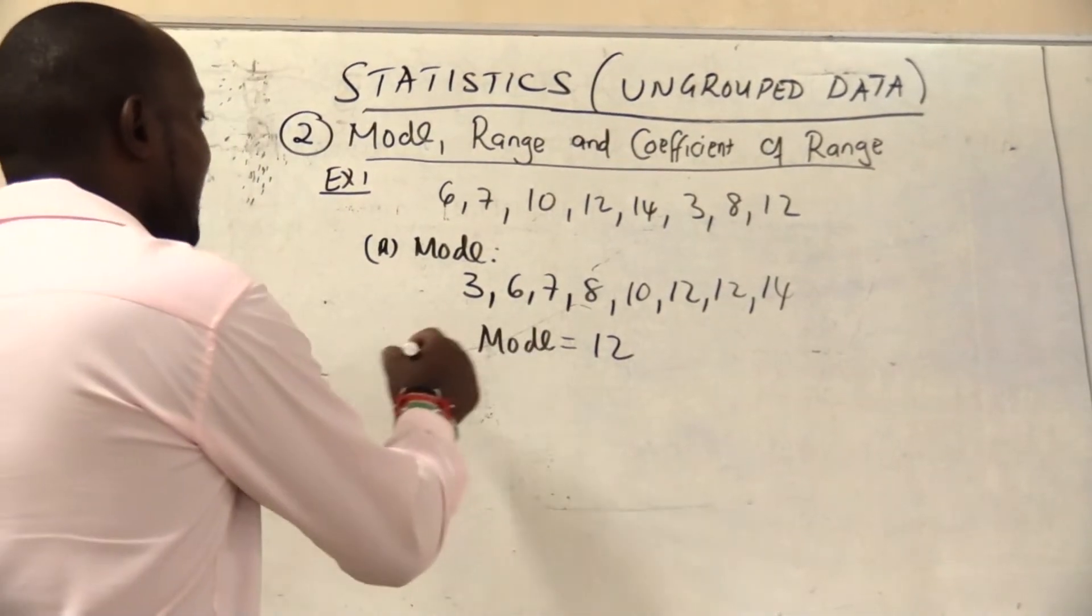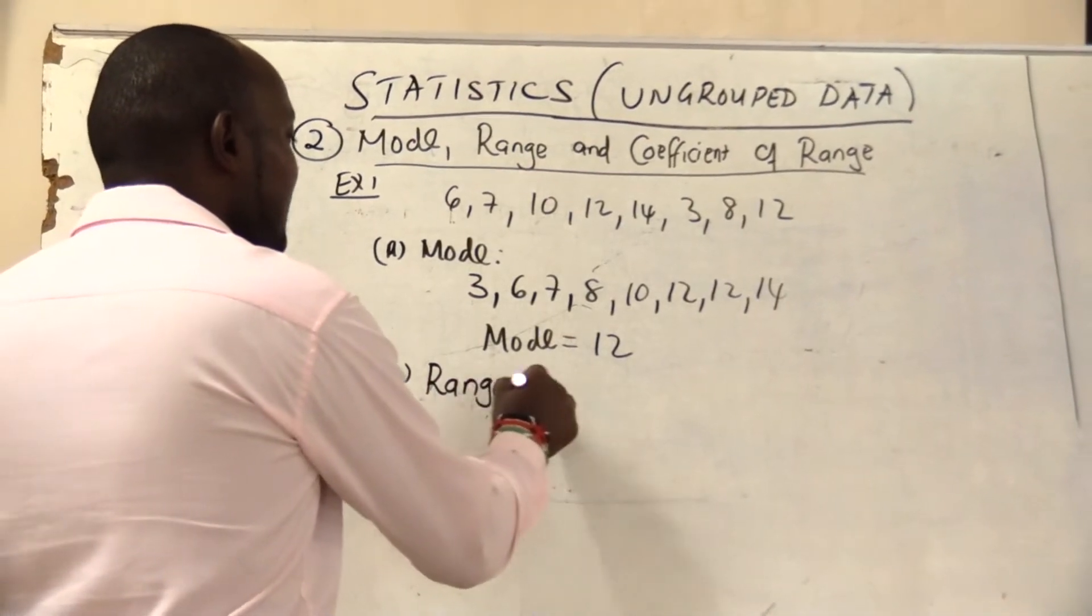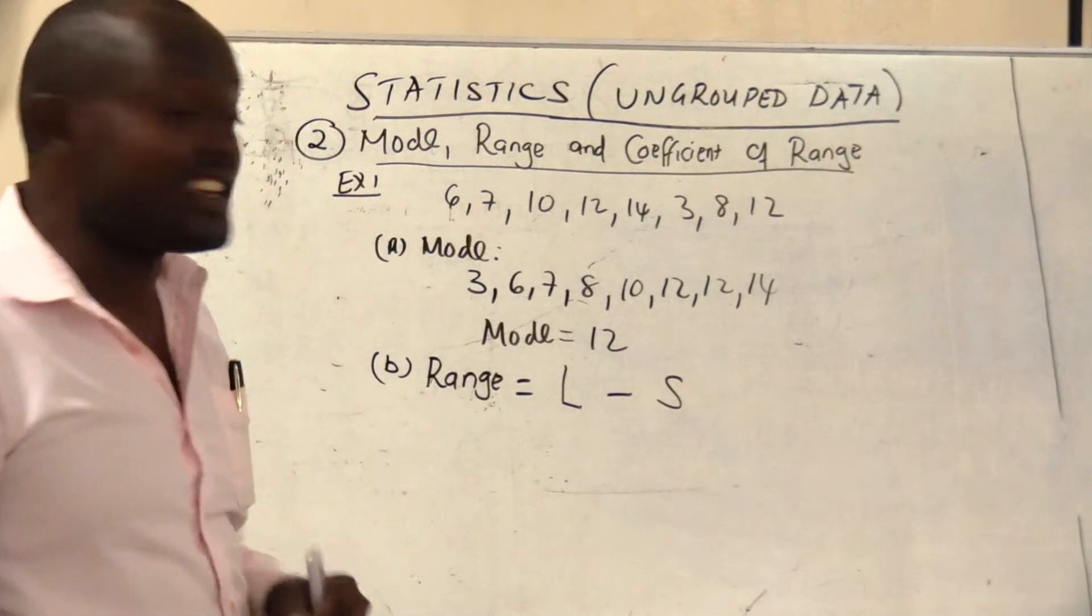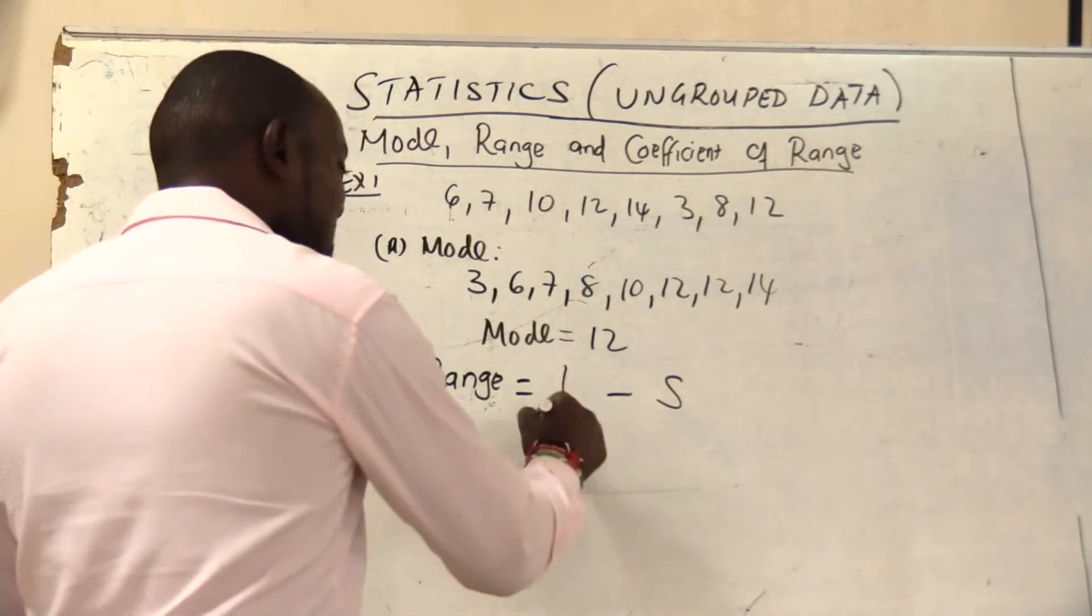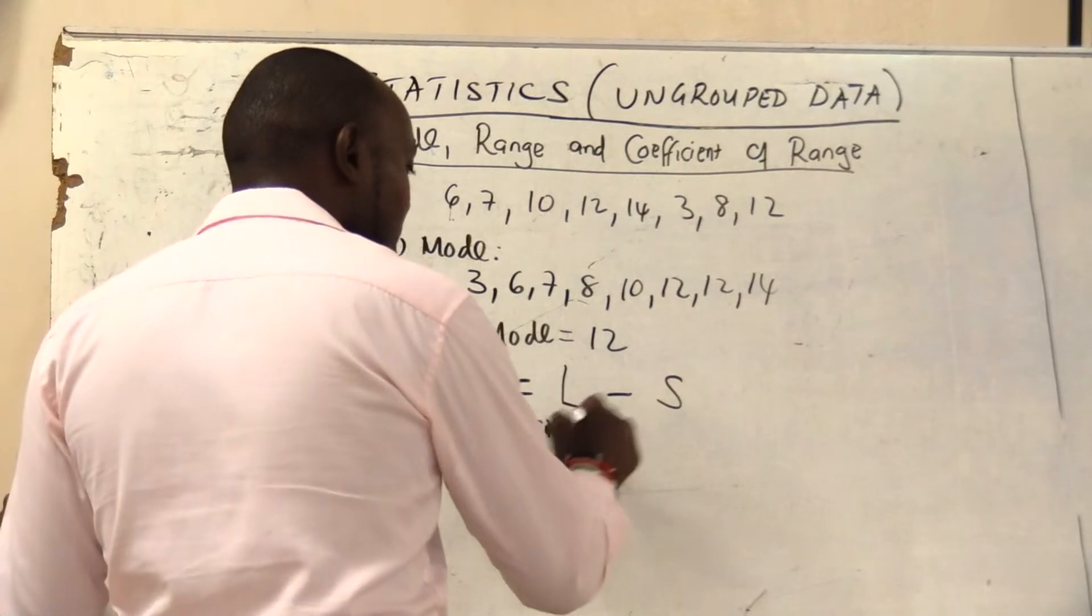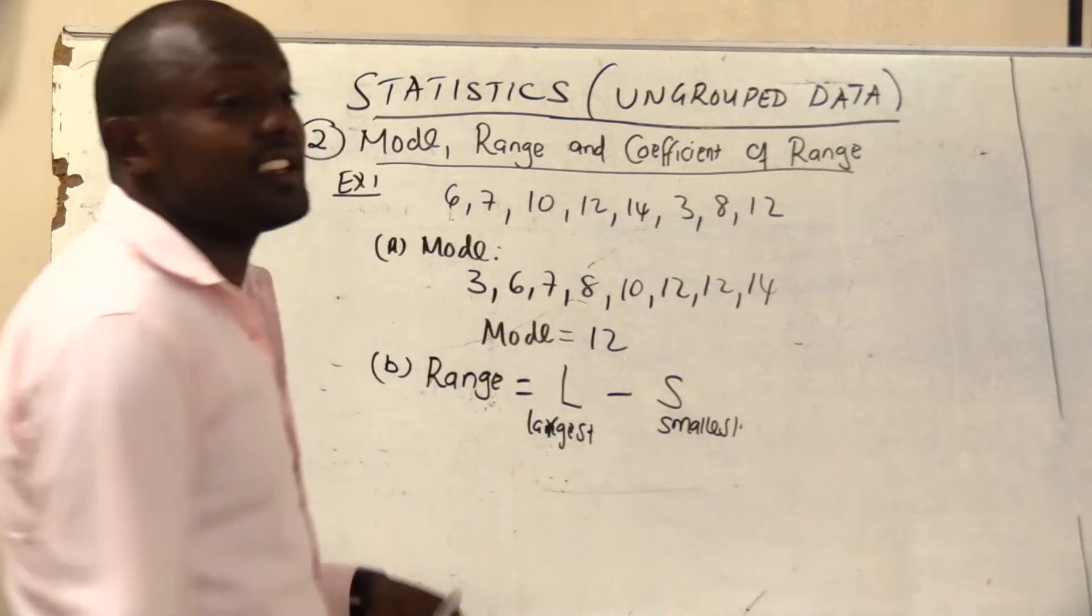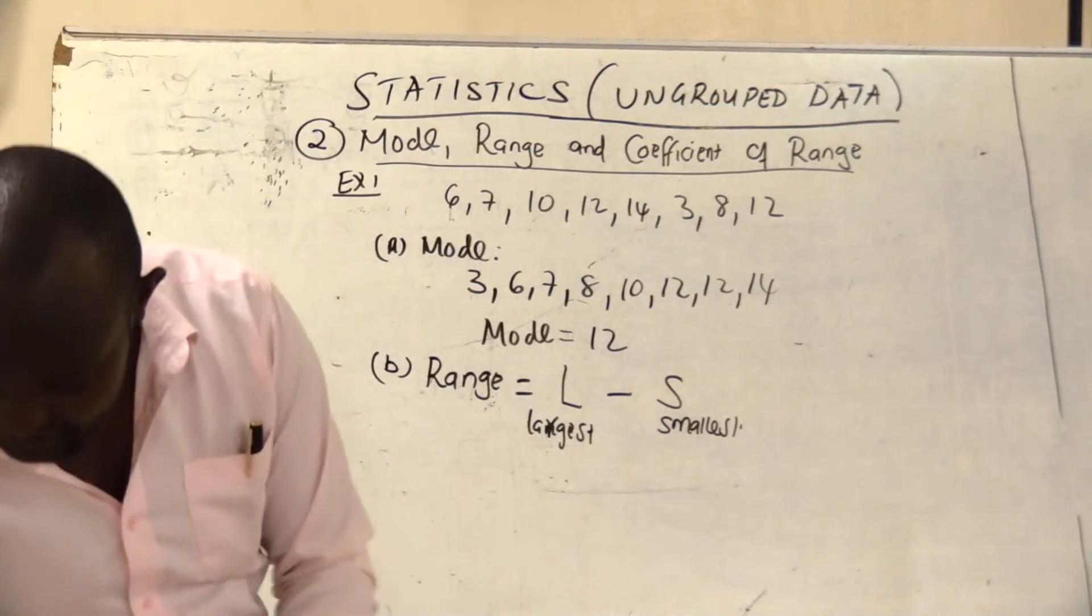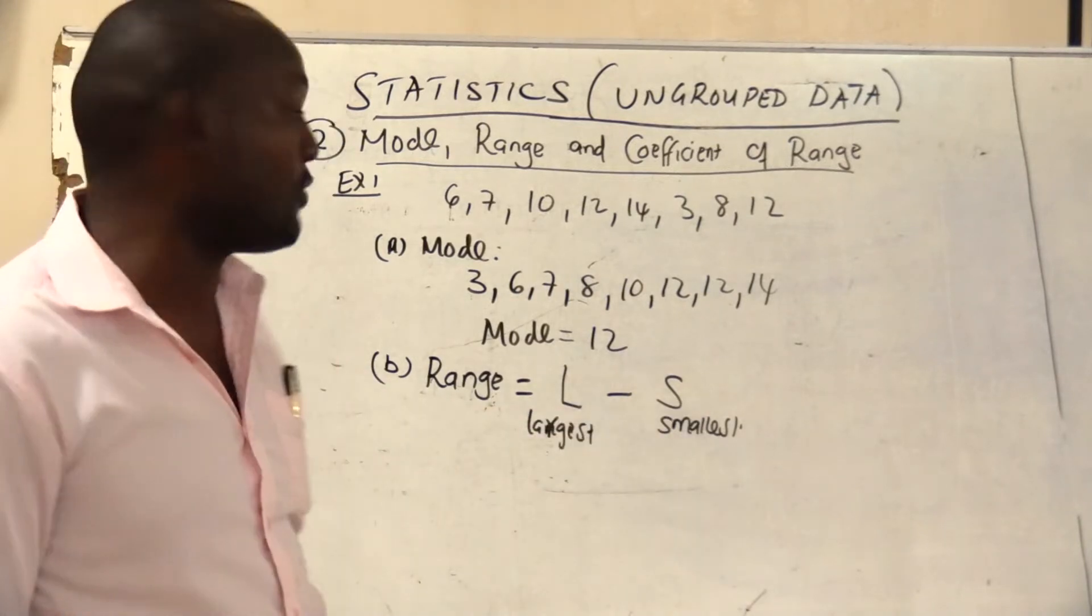Then the next one is how do we calculate range? Range I use L minus S. So in this case how do we calculate range? I use L minus S where L is the largest and S is the smallest. So in this case I'm calculating the difference between largest and the smallest. My L is the largest value and S is my smallest value.